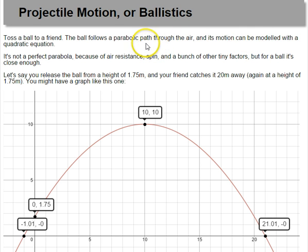So the first situation is that you're tossing a ball to a friend, and I gave a bunch of information up here, but you release the ball from 1.75 meters in the air, and the friend catches it way over here, 20 meters away, again at 1.75 meters, which I didn't mark on this graph.